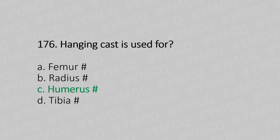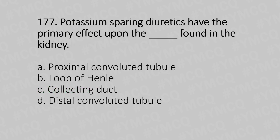Question 177: Potassium-sparing diuretics have the primary effect upon the dash formed in the kidney — Option A: Proximal convoluted tubule, Option B: Loop of Henle, Option C: Distal convoluted tubule. And the answer is Option C, distal convoluted tubule.